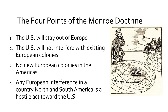The fourth point: any European interference in a country in North or South America would be considered a hostile act toward the United States. So if a European country tried to undermine a government in Central or South America, the US would view that as a hostile action — an act of war.